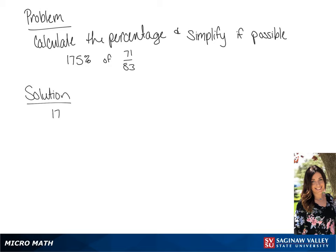We want to calculate 175% of 71 over 83, so we have 175 over 100 times 71 over 83. Before we multiply, we're going to simplify the first fraction. We can simplify it to 7 over 4, so we have 7 over 4 times 71 over 83.